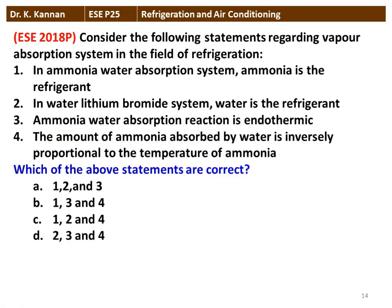The next question from the 2018 question paper on vapor absorption systems: Statement 1 — in the ammonia-water absorption system, ammonia is the refrigerant. Statement 2 — in the water-lithium bromide system, water is the refrigerant. Statement 3 — ammonia-water absorption reaction is endothermic. Statement 4 — the amount of ammonia absorbed by water is inversely proportional to the temperature of the ammonia. The correct statements are 1, 2, and 4. Statement 3 is not correct.